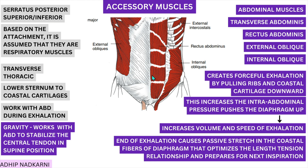When the diaphragm is pushed up, both the volume and the speed at which air goes out are increased — so there is an increase in volume and speed of exhalation. Along with this, there are also two more ways in which the abdominal muscles can help in the inhalation process as an accessory muscle.